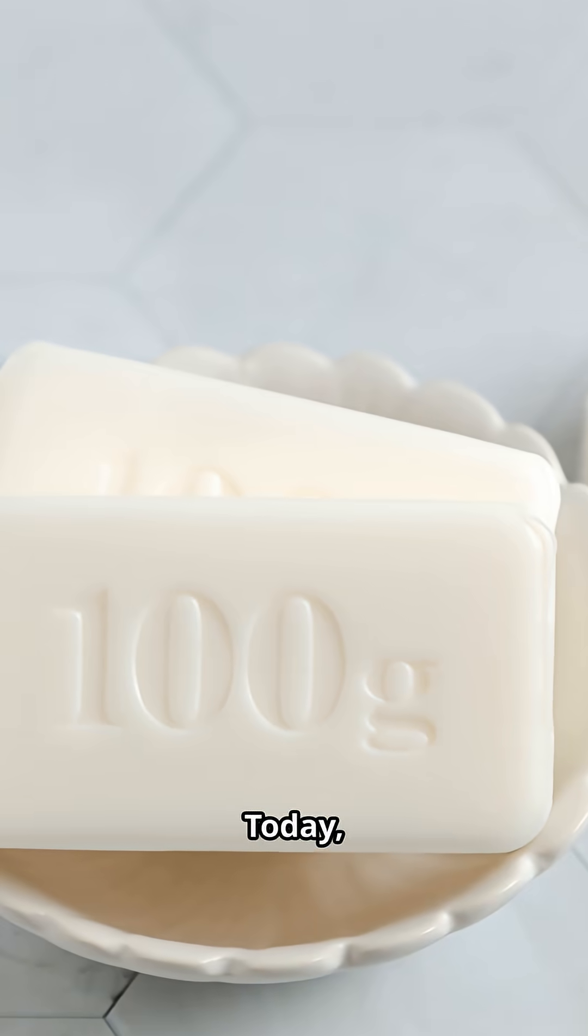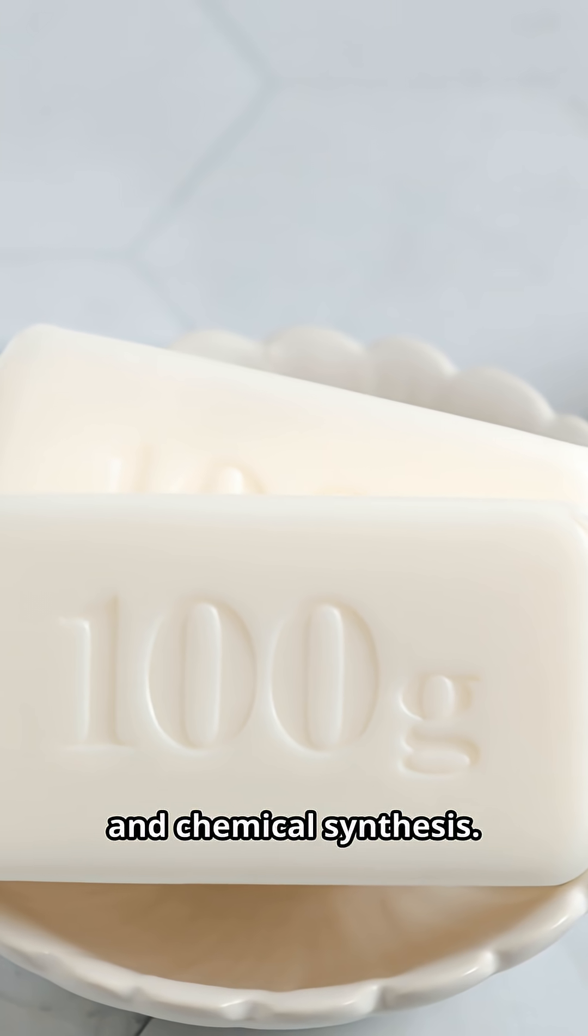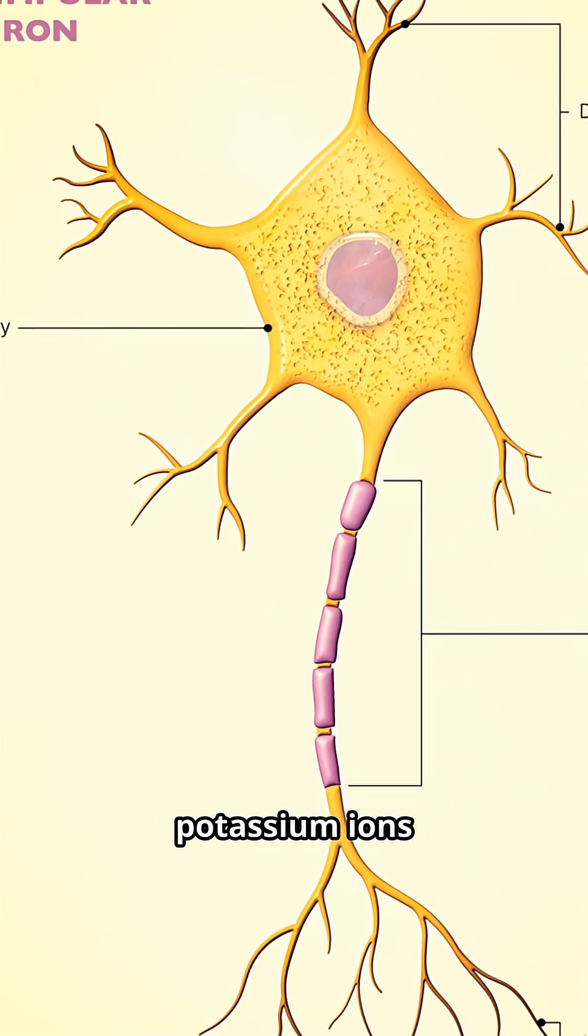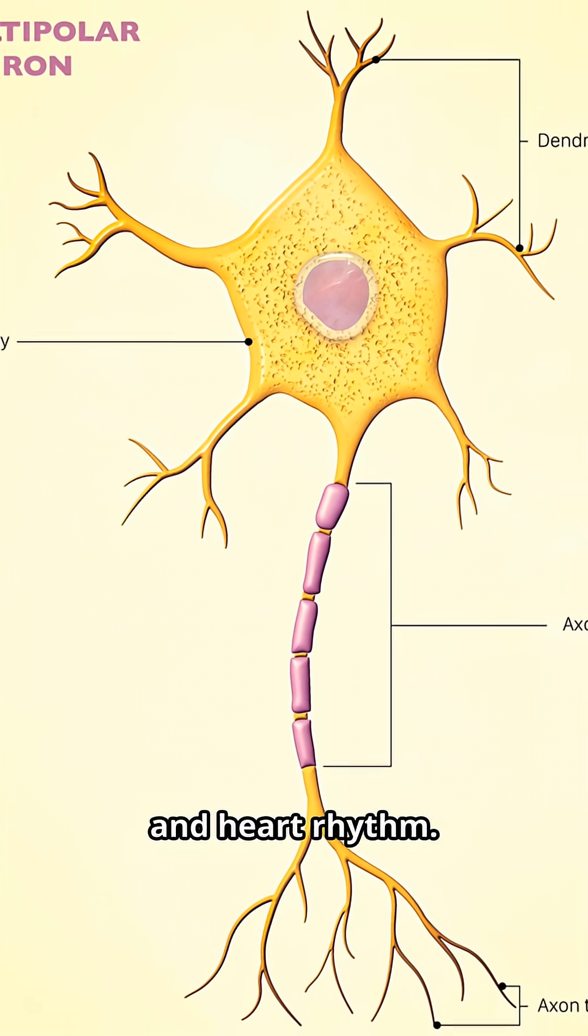Today, potassium is essential for fertilisers, food production, soaps and chemical synthesis. Inside your body, potassium ions control nerve impulses, muscle contractions and heart rhythm.